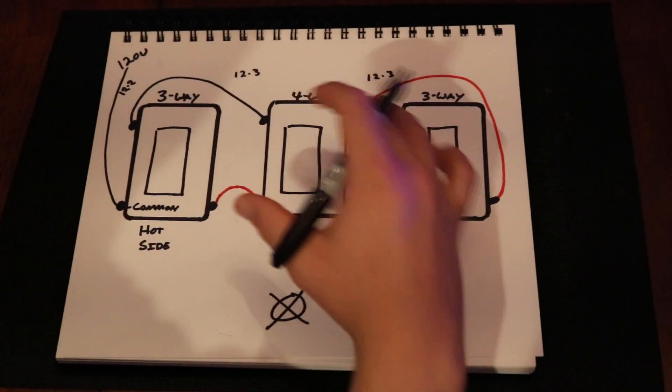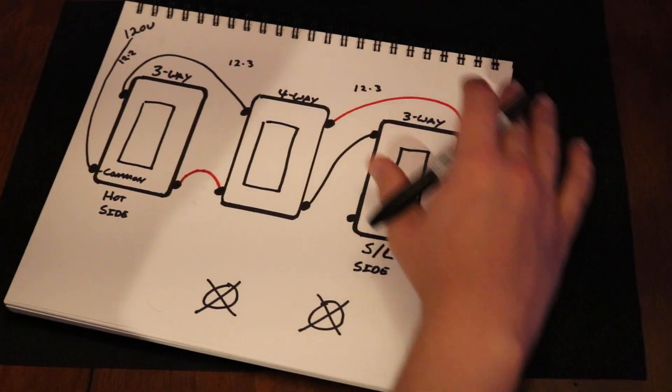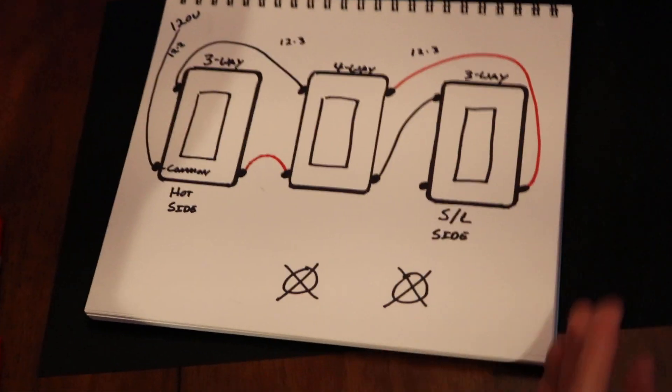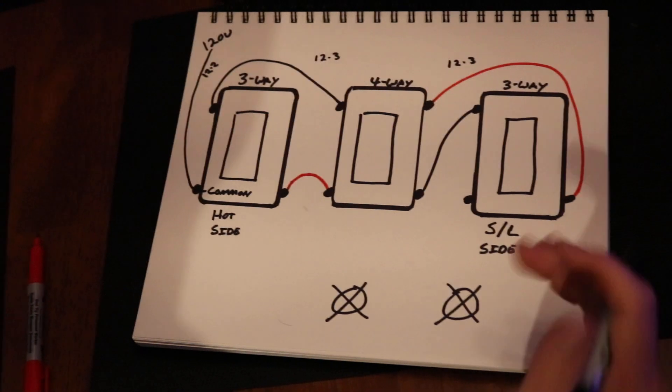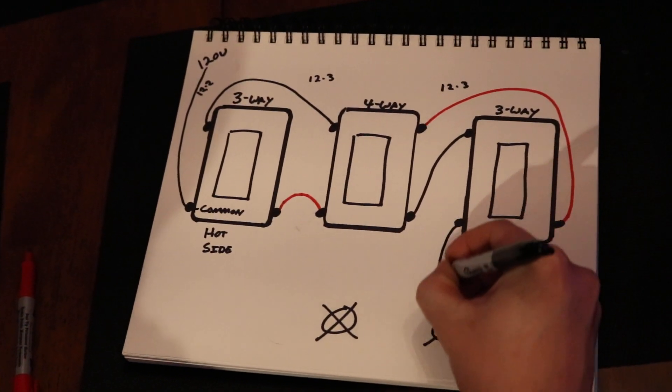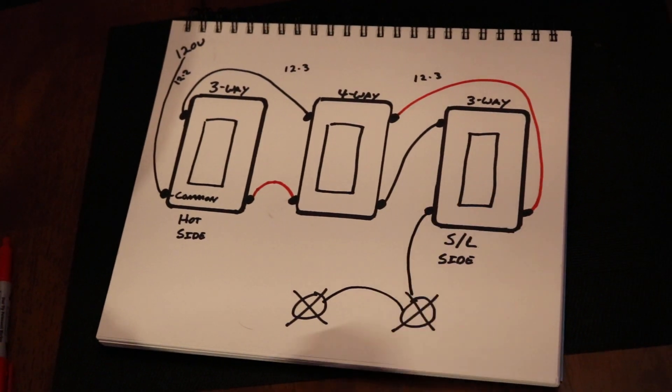So the incoming, you put on one side, and the outgoing you put on the other, and you crisscross the colors. So we have our incoming outgoing. Now we're at the three-way, which is the switch leg side. We call it the switch leg side because that's the side of the three-way that's going to go to the light, like that.